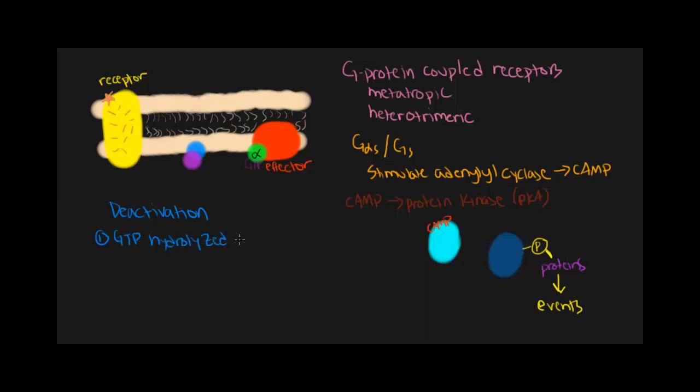Remember that in its inactive state, the alpha protein is carrying GDP. This means that we are inactivating the alpha subunit. Inactivation of the subunit means that the alpha subunit is going to dissociate from our adenylyl cyclase.